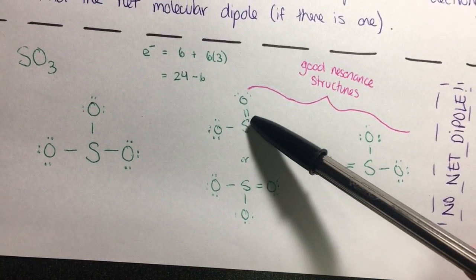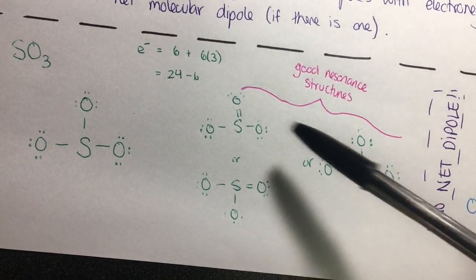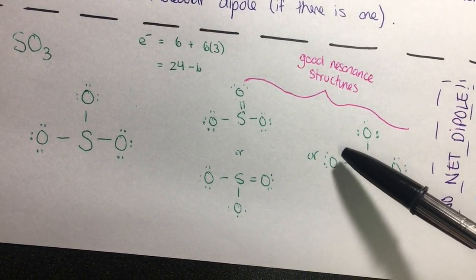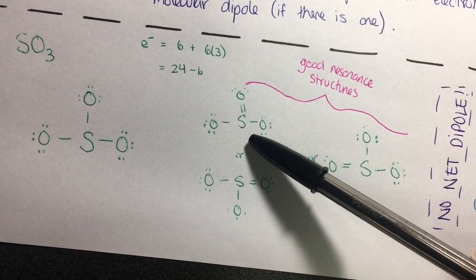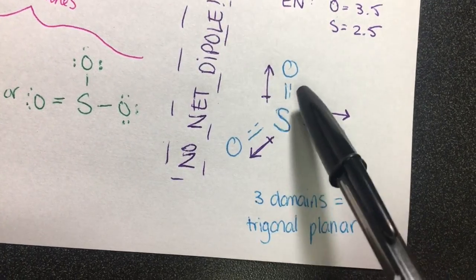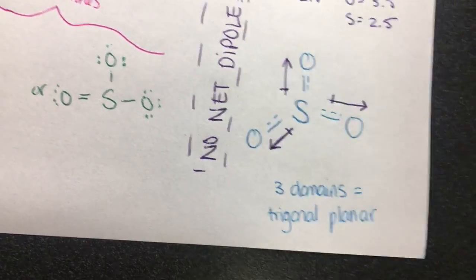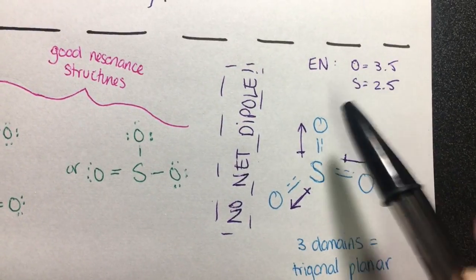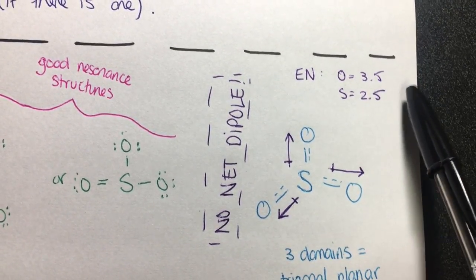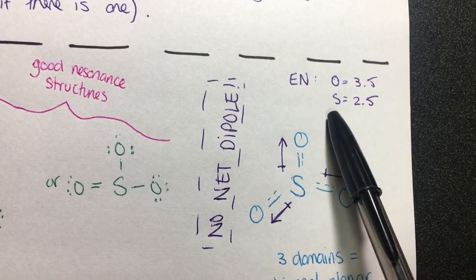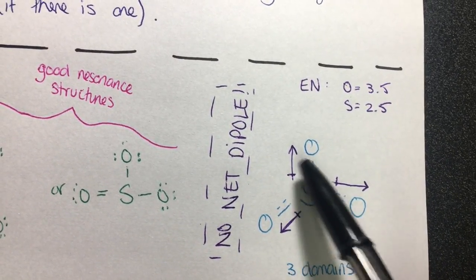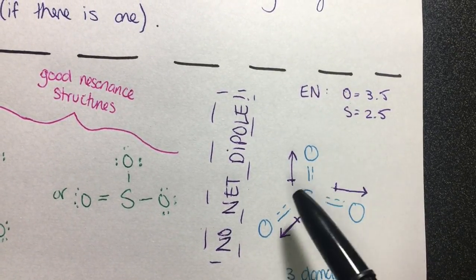There is no true double bond in this molecule, but rather one and one-third of a bond shared between each oxygen and the sulfur. This molecule has three domains and its geometry is trigonal planar. The electronegativity of oxygen is 3.5 and the electronegativity of sulfur is 2.5. Since sulfur is less electronegative, the positive side of the dipole goes towards sulfur and the negative side goes towards oxygen.